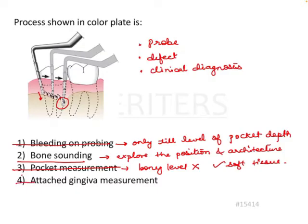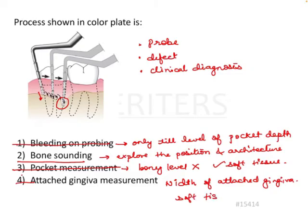The last option is measurement of attached gingiva. You assess the width of attached gingiva by measuring the pocket depth or sulcus depth and the height of the mucogingival junction. That is also a soft tissue related procedure, so this is not a correct option either.